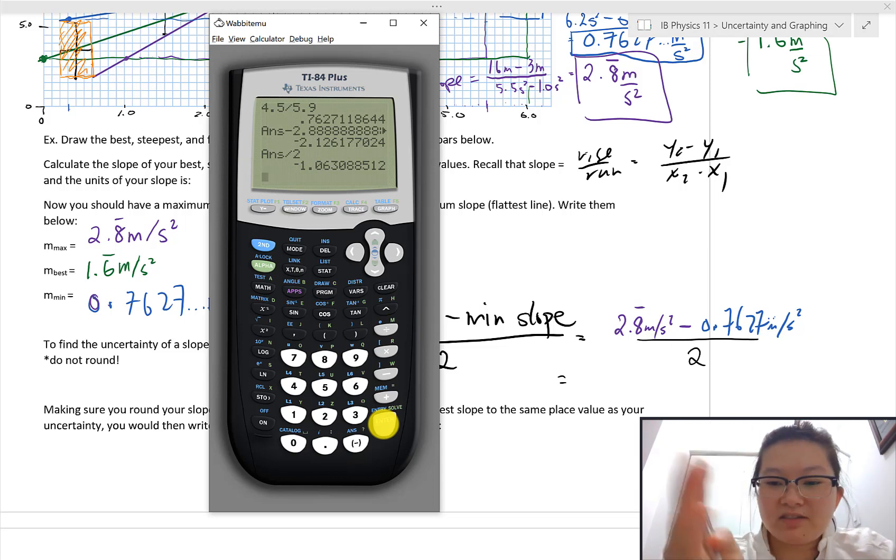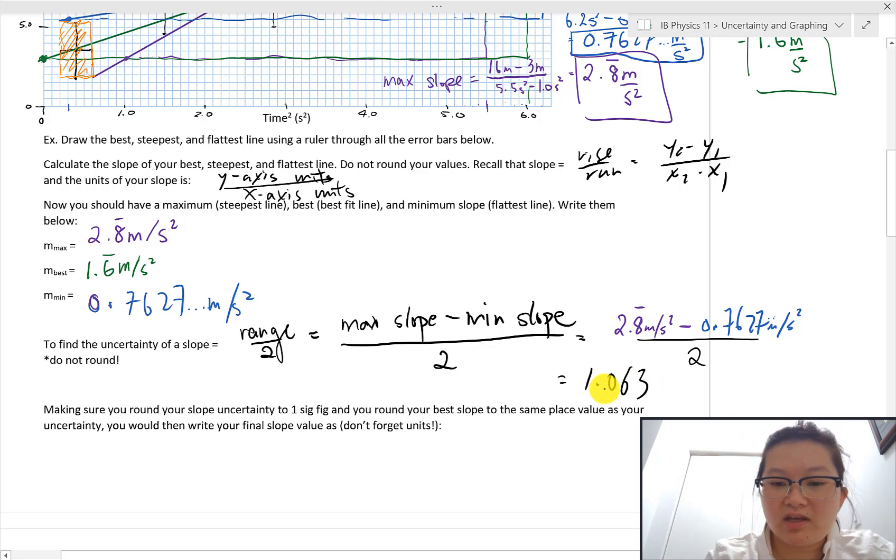Again, forget the negative sign. It was just me flipping it. So 1.063 and units of meters per second squared.